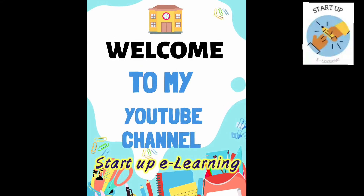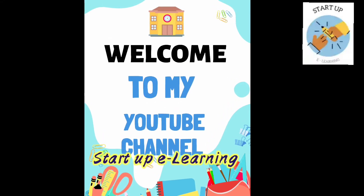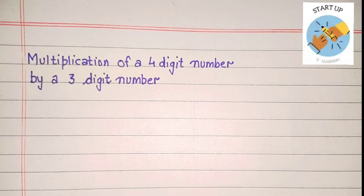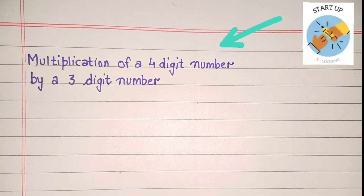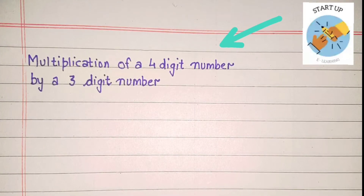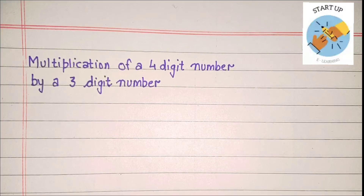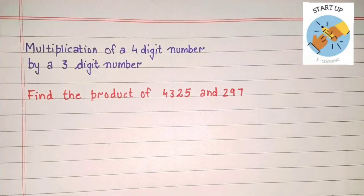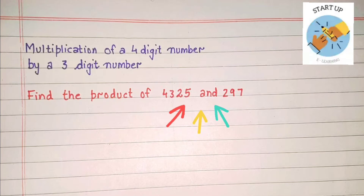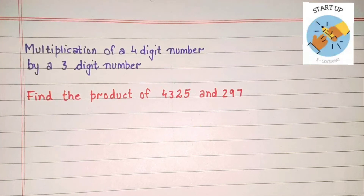Hello everyone, welcome back to my YouTube channel Startup E-Learning. In this video we will learn multiplication of a four-digit number by a three-digit number, also known as long multiplication. Let's find the product of 4325 and 297.